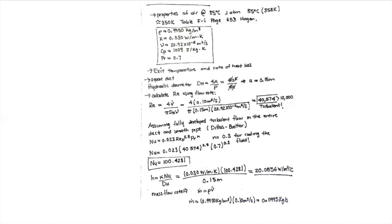When we have a cross-sectional area that is not circular, we correct the diameter with the hydraulic diameter. The formula for the hydraulic diameter is four times the cross-sectional area divided by the wetted perimeter. For a square duct, four times A divided by four times A gives simply A, so the hydraulic diameter equals 0.15 meters.